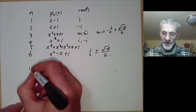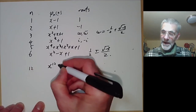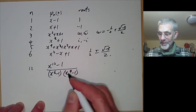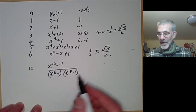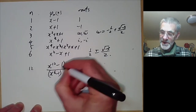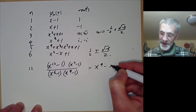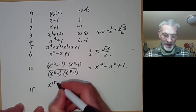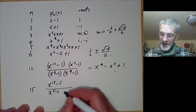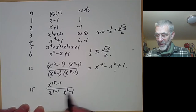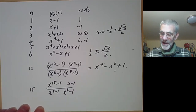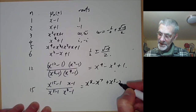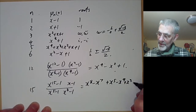Let's try a slightly more complicated one. For n=12, we would take x^12 - 1, then throw out the sixth roots of 1 and the fourth roots of 1. But then we've thrown out the square roots of 1 twice over, so we should multiply back by x^2 - 1. If you work this out, it's just x^4 - x^2 + 1. For n=15, we take x^15 - 1, divide by x^5 - 1 and x^3 - 1, and add back x - 1 since we threw out 1 twice. This gives x^8 - x^7 + x^5 - x^4 + x^3 - x + 1.